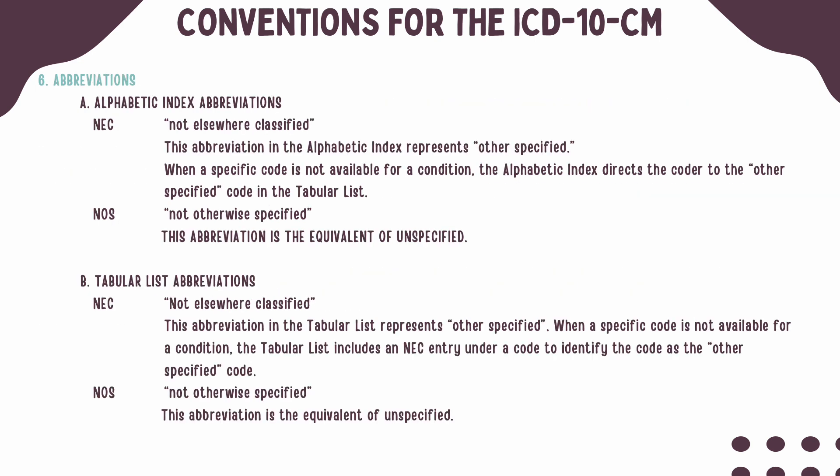You will notice two abbreviations used throughout the ICD-10-CM manual. When NEC is noted, it means not elsewhere classified, and it is the equivalent to an other specified code. This type of note will be used when the provider's documentation is more specific than the code set. When NOS is noted, it means not otherwise specified, and it is equivalent to an unspecified code. This type of code should only be used when the provider's documentation does not give enough detail to choose a more specific code.